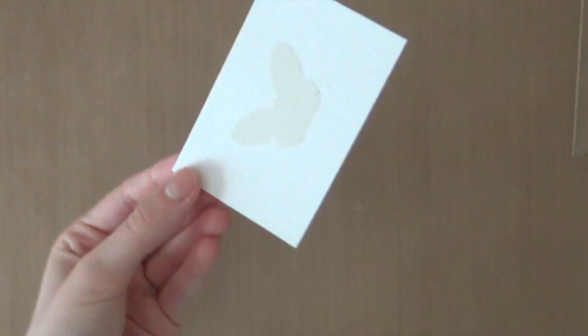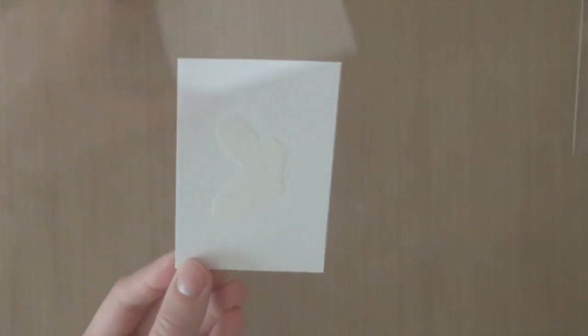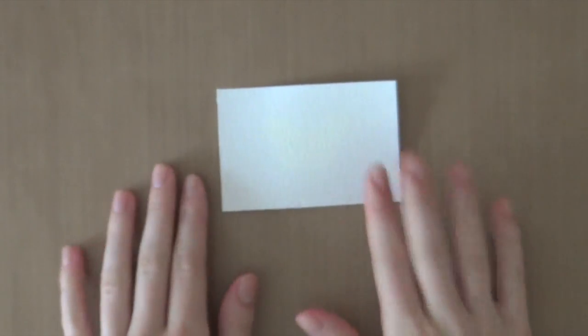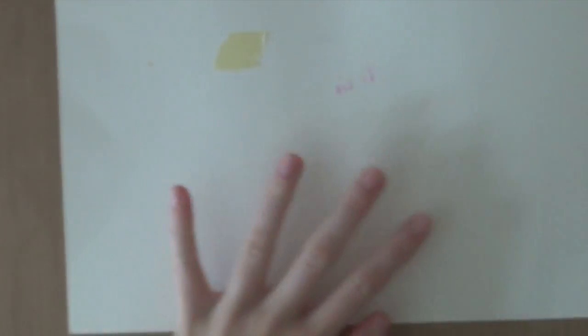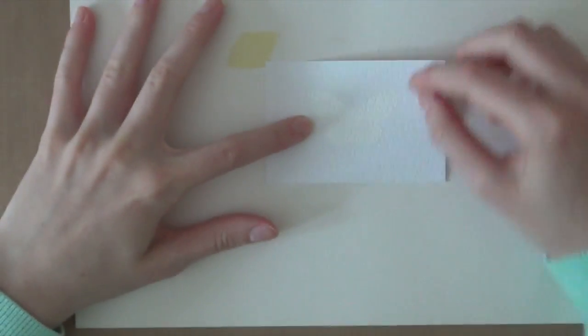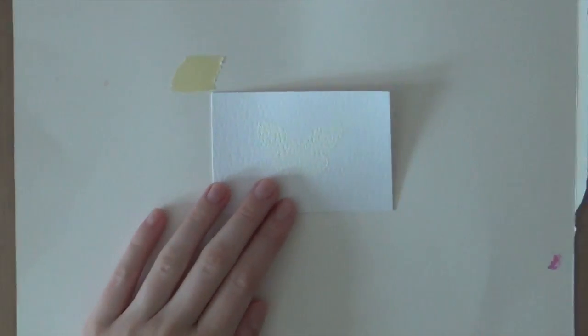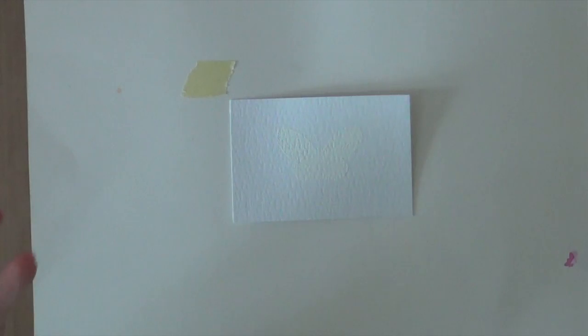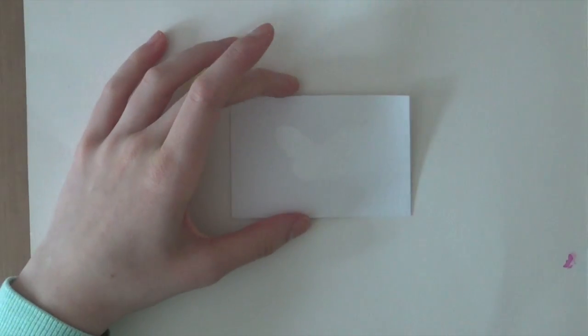So now I'm going to heat set the powder using my heat gun. So now it's time for the fun part because I'm going to start watercoloring. So I'm just going to use some cardboard as my work surface.